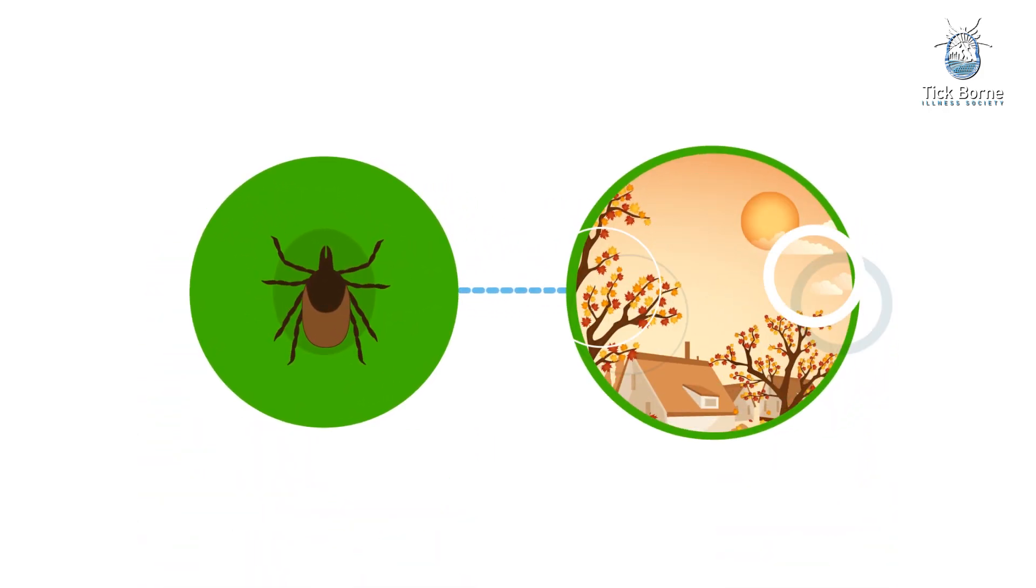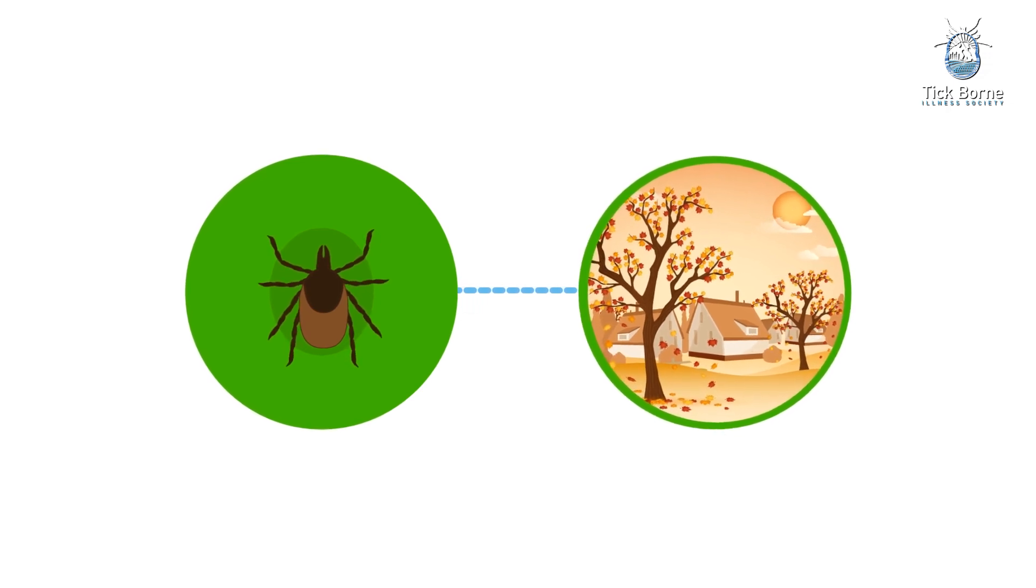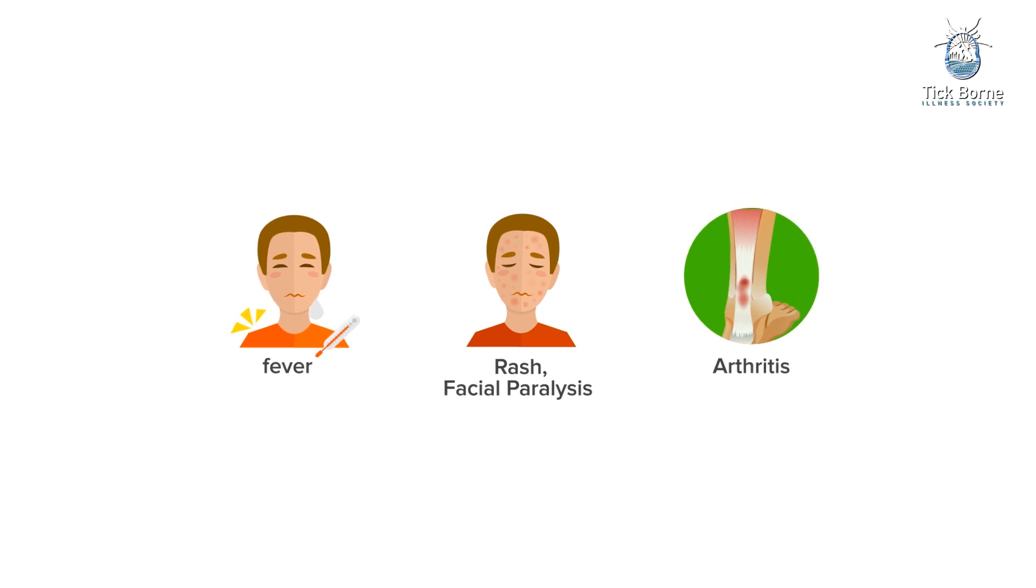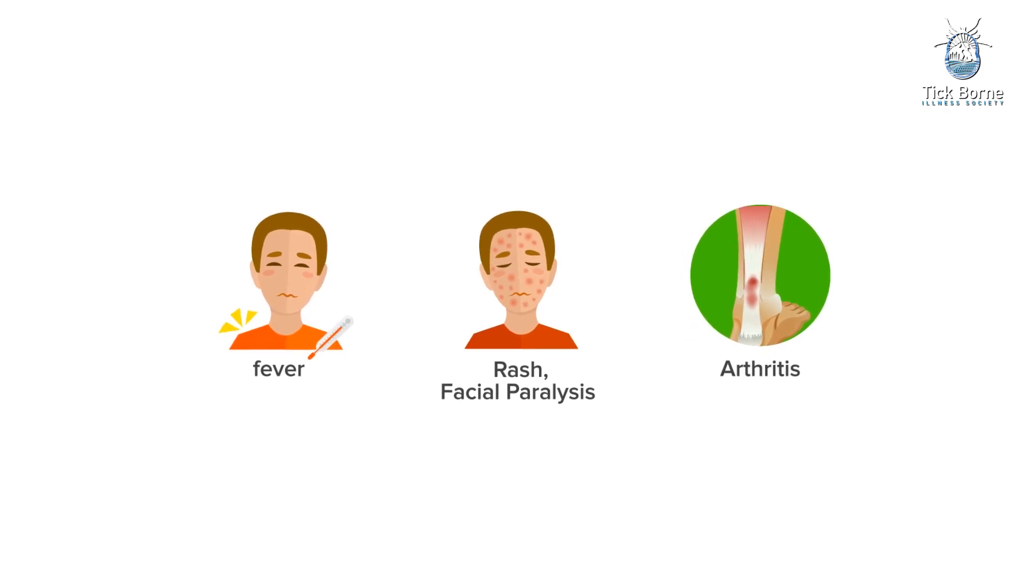Adult Ixodes ticks are most active during the cooler months of the year. Untreated Lyme disease can produce a wide range of symptoms depending on the stage of infection.